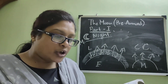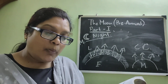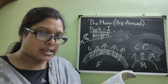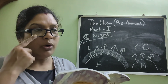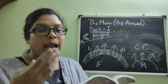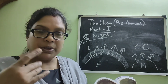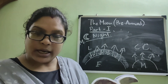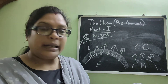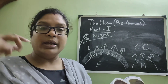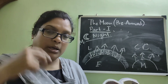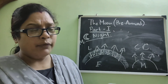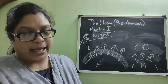If you shout on the moon, nobody can hear you. This is because sound travels through air, and on the moon there is no air, no wind, and no cloud. So on the moon, if you shout, no one can hear you.